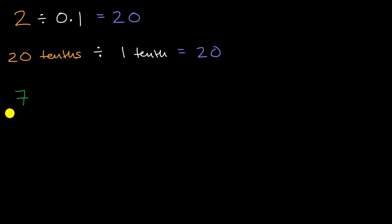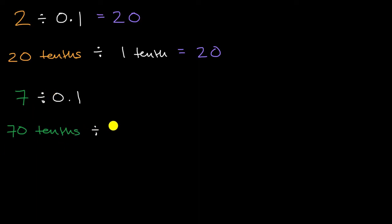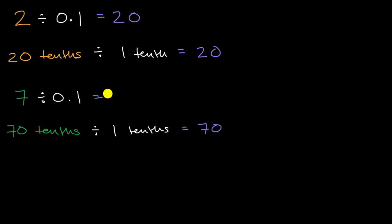What if we take seven divided by one tenth — what is that going to be equal to? Same idea. Seven ones is the same thing as 70 tenths. And if I divide that by one tenth, 70 of something divided into groups of one of that something is going to be 70 equal groups. So seven divided by one tenth is equal to 70.